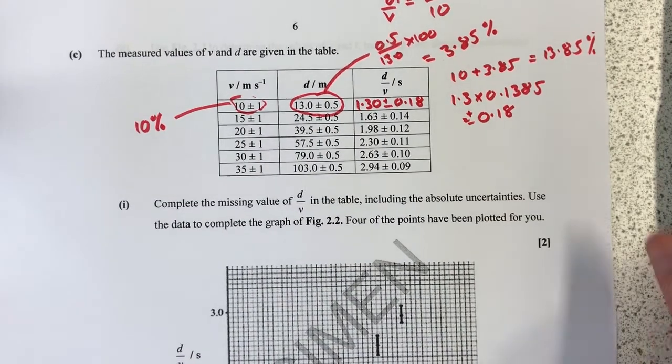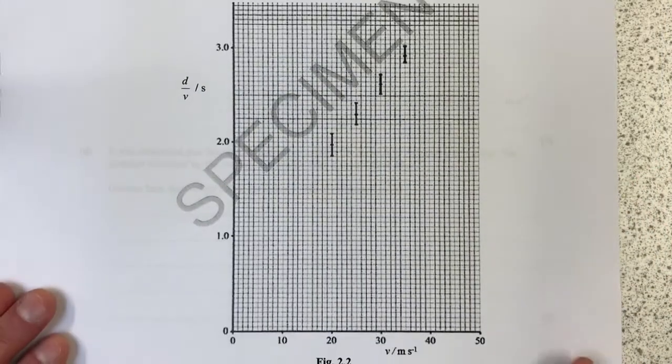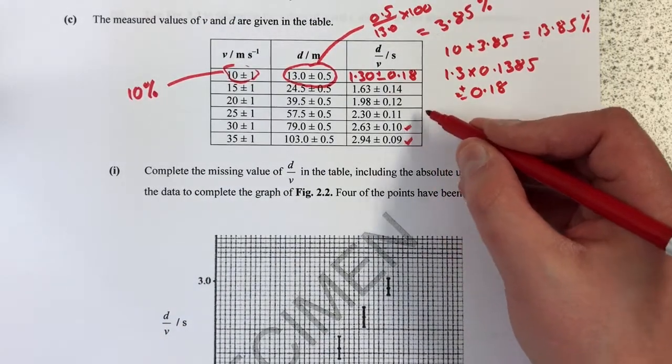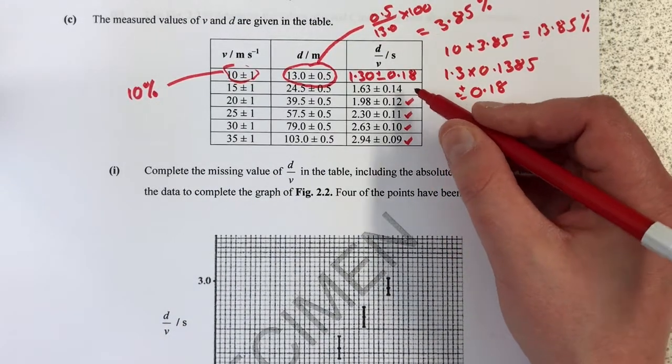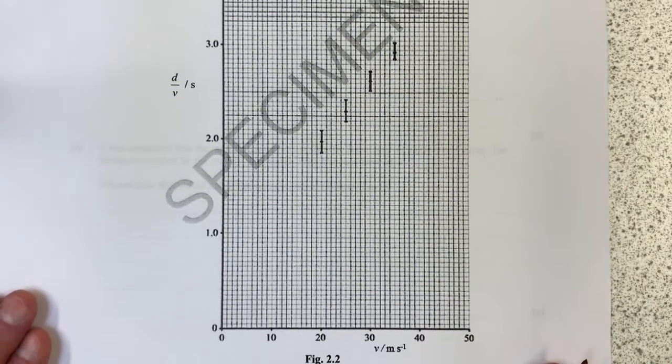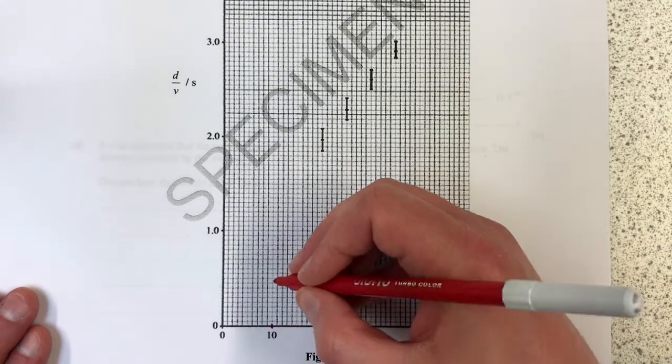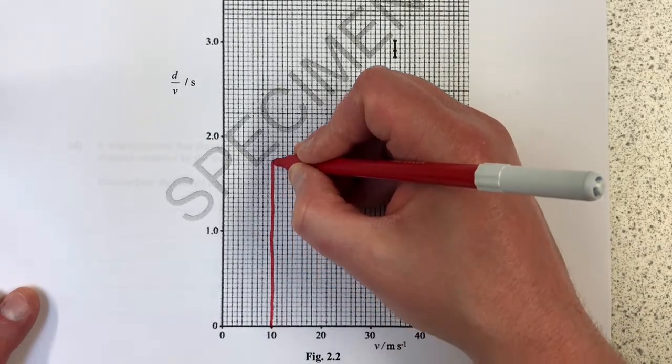Now we have the general game of plotting these points on a graph. It looks like this one's been done, this one's been done, this one's been done, and this one's been done, but these two haven't. The graph paper's pretty shoddy to use.